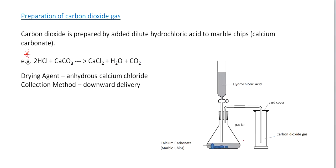Carbon dioxide is denser than air, so the collection method is downward delivery. If we want a dry sample of carbon dioxide, we use anhydrous calcium chloride as the drying agent.